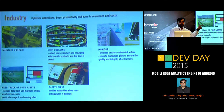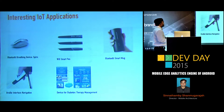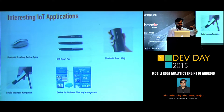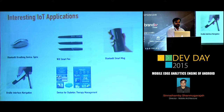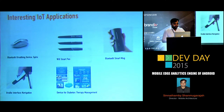IoT is going to impact everywhere. There are interesting devices like a Bluetooth breathing device, a Wi-Fi smart pen, a Bluetooth smart marker that identifies liquids, Braille interface navigation for blind people, and a diabetes device for therapy management. IoT is going to change the way we work.